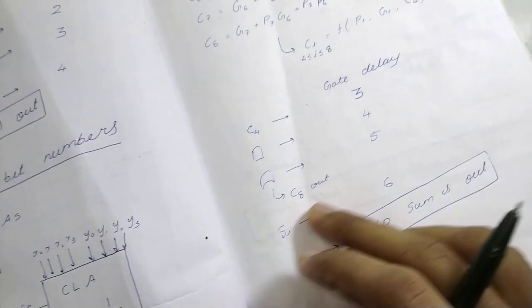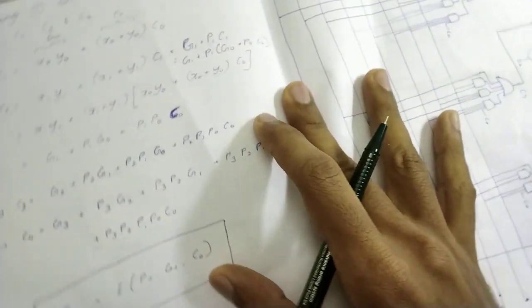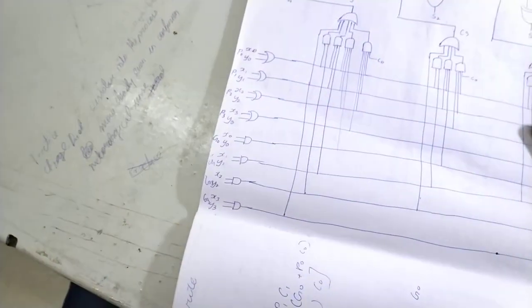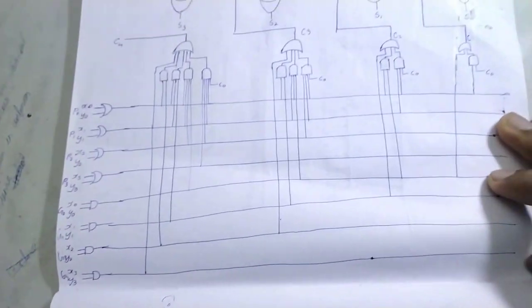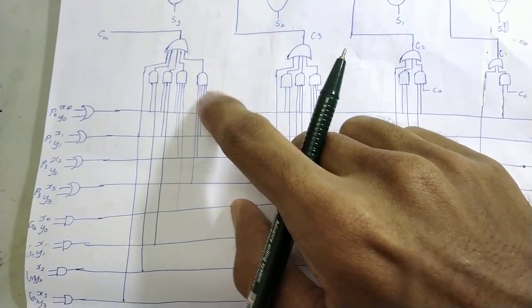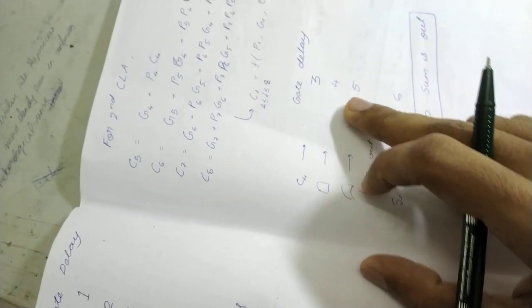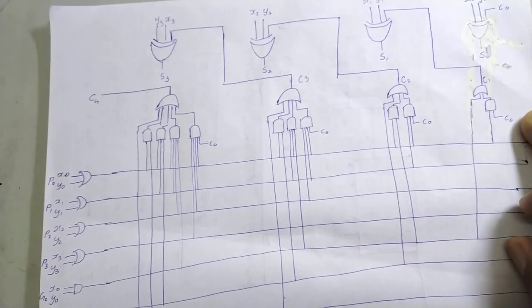So what happens is, the C0, when this C4 comes in, all this and the XIs and YIs are already available. Because here itself, we give all the inputs. So all the generate and propagate functions are already available. It's all available in the inputs. So it was only waiting for the C4 that comes from here. So, in the next 5th gate delay, what happens is, in the 4th gate delay, what happens is, all the AND gates activate.